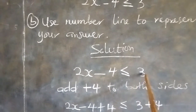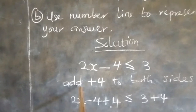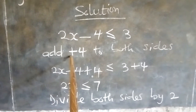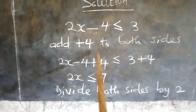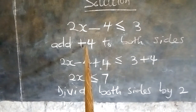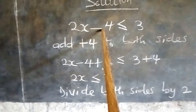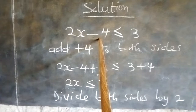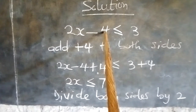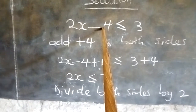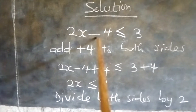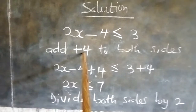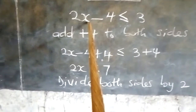Given 2x minus 4 less than or equal to 3, the next step is to add plus 4 to both sides. We need to take away this minus 4, and the only thing you can use to take away minus 4 is the opposite, which is plus 4. When you add plus 4 to minus 4, it equals 0.